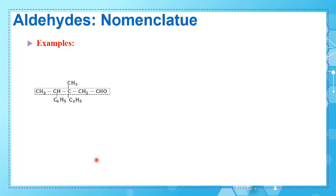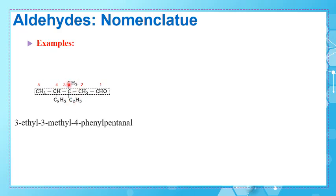Look at this molecule of aldehyde. The main carbon chain is circled. Pay attention: the carbon bearing the carbonyl group must be included in this chain, and we start numbering so that the carbonyl carbon gets the smallest number — which for aldehydes is always 1 because it is terminal. Numbering gives carbons 1, 2, 3, 4, 5. The name is 3-ethyl-3-methyl — respecting alphabetical order, ethyl (E) before methyl (M) — 4-phenylpentanal. Phenyl is C₆H₅, the benzene ring when it is a branch.